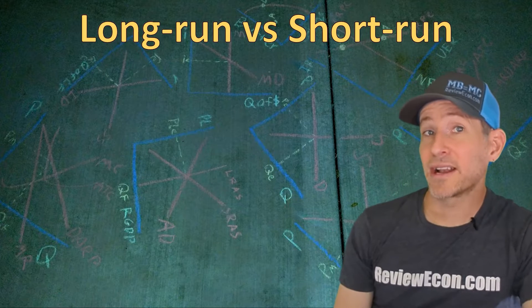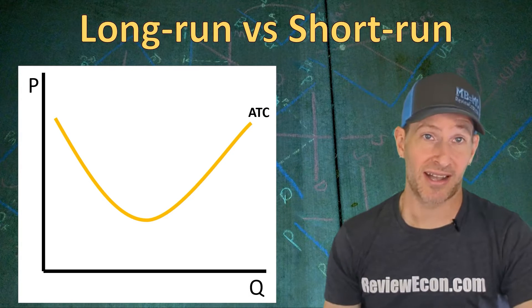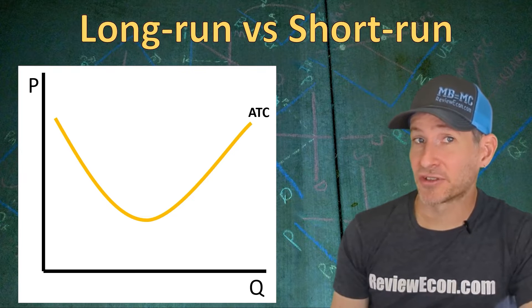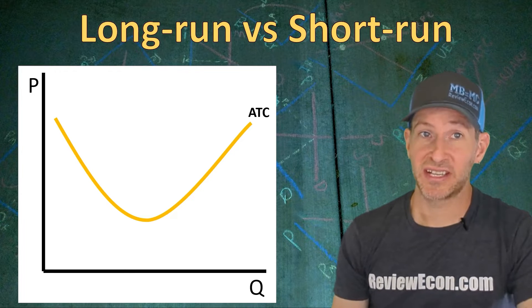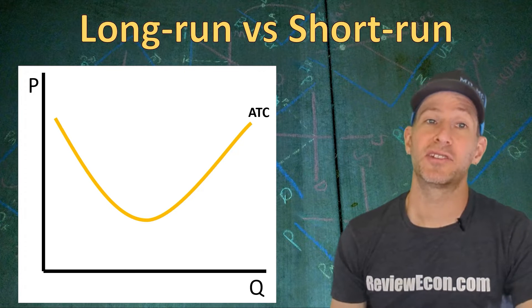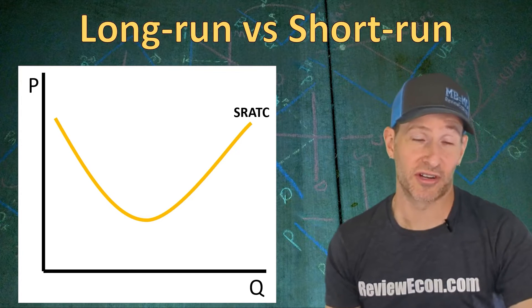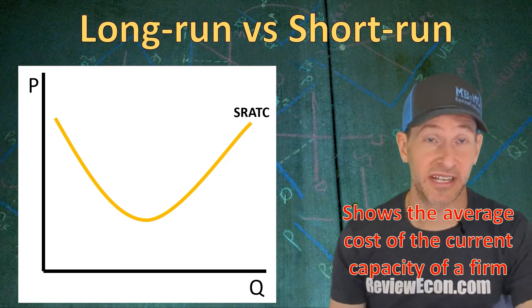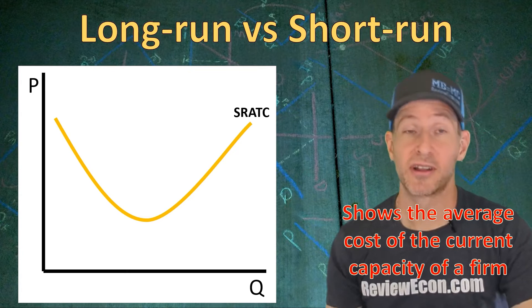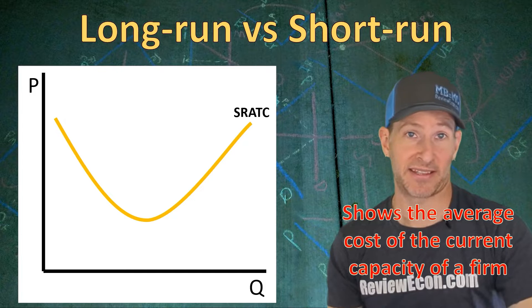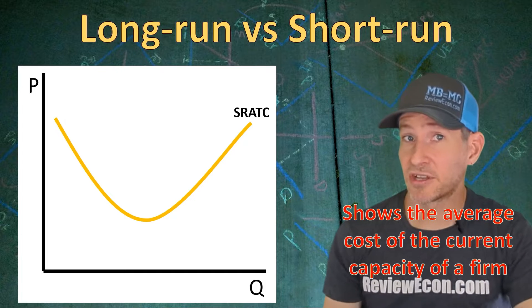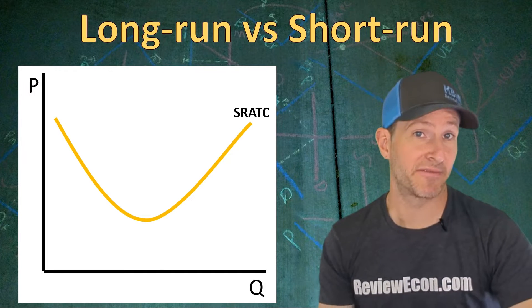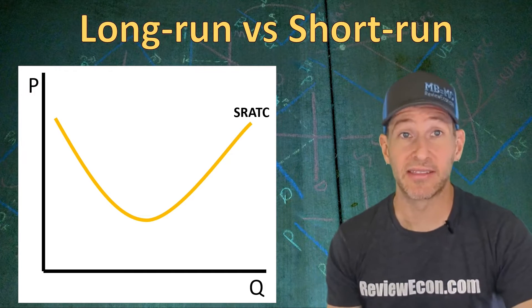Now, we have already seen the average total cost curve for a firm, but this average total cost curve is actually a short run average total cost curve. It shows the average cost of production for different units of output for a firm's current capacity. But today we're talking about businesses being able to increase the capacity of production in the long run.